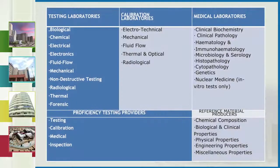A testing laboratory covers biological, chemical, electrical, electronics, fluid flow, mechanical, non-destructive testing, radiological, thermal, and forensic testing. Calibration covers electro-technical, mechanical, fluid flow, thermal, optical, and radiological calibration. Medical laboratories include clinical biochemistry, clinical pathology, hematology, immunohematology, microbiology and serology, histopathology, cytopathology, genetics, nuclear medicine, and in vitro tests only. These are the kinds of labs NABL certifies.